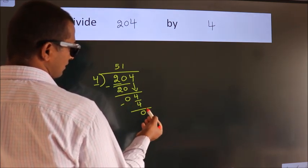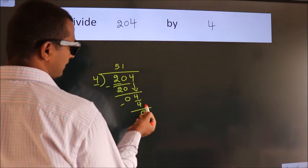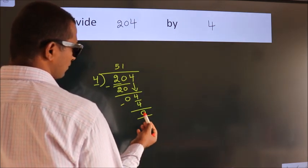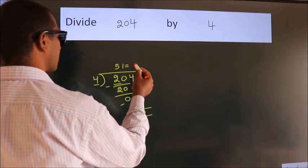After this, no more numbers to bring down. We got remainder 0. So this is our quotient.